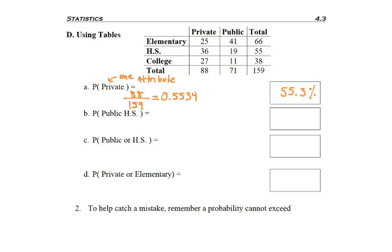So let's go ahead and do another problem. Now I'm asked to find the probability that somebody goes to a public high school. So again, I'm only looking for one attribute, but it's just a little bit more specific.